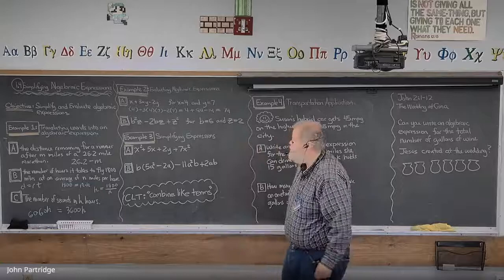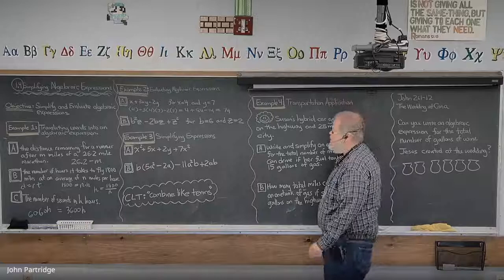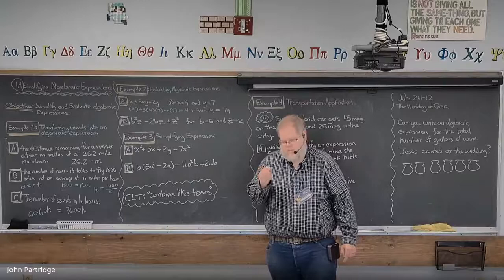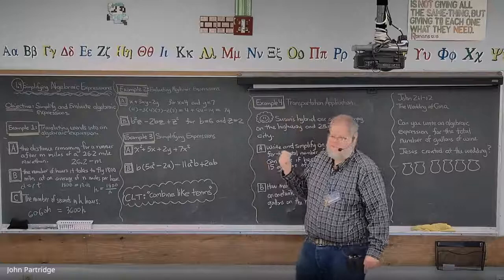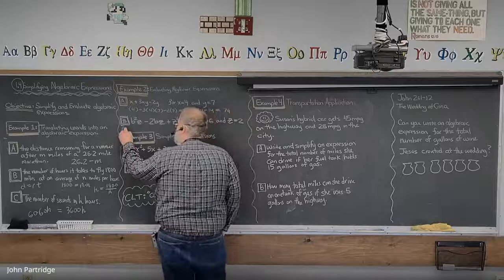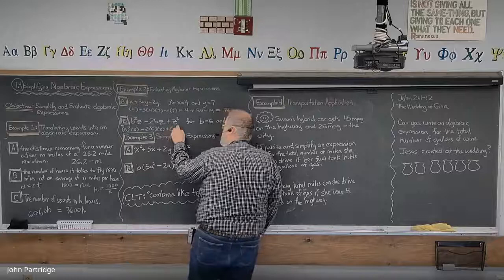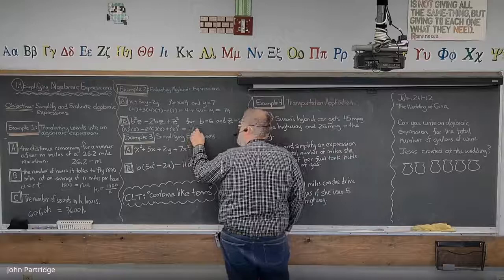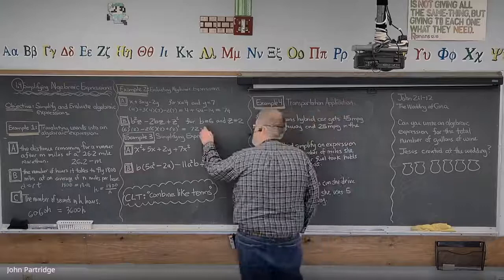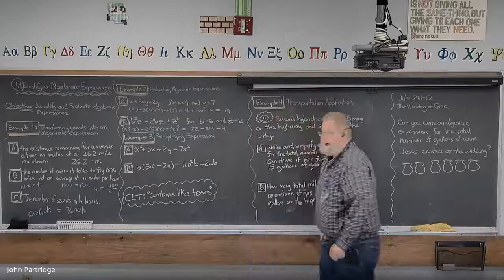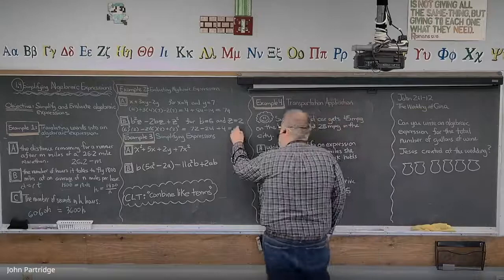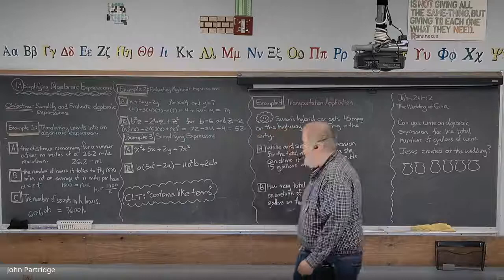Next: B squared Z minus 2BZ plus Z squared. As a teacher I put dashes through Z's because otherwise they look like 2's. Using the substitution property with parentheses: 6 squared times 2 minus 2 times 6 times 2 plus 2 squared. 6 squared is 36, times 2 is 72. 2 times 6 is 12, times 2 is 24. 2 squared is 4. Negative 24 plus 4 is negative 20, and 72 minus 20 is 52. And so we've evaluated that.